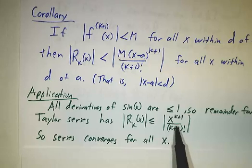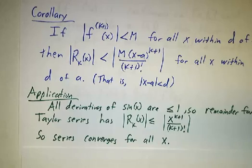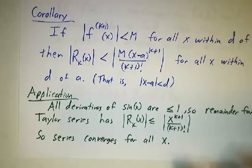and no matter how big x is, as k plus 1 gets bigger and bigger and bigger and bigger, this term gets smaller and smaller and smaller. So the remainder gets smaller, and our series gets closer and closer and closer to the true function. This is what we'd like to see for lots of things.